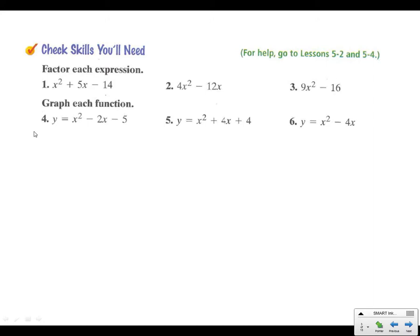Skills checks we'll need. We've got to factor. I'll do 1, you do 2 and 3. Number 1, what multiplies to negative 14 and adds to 5? And so on this one, we could go 7 and 2, where the 7 is positive and the 2 is negative. 7 times negative 2 is negative 14.